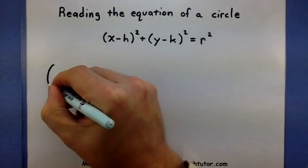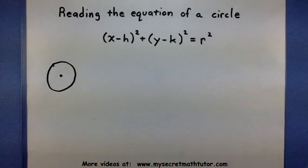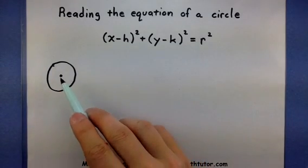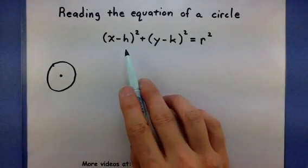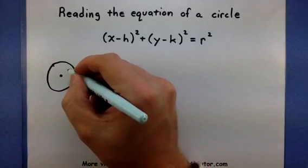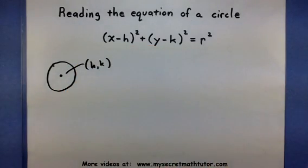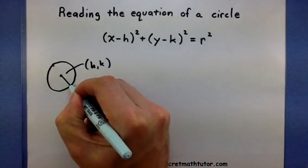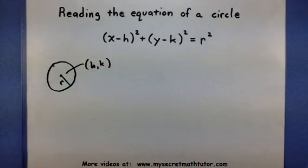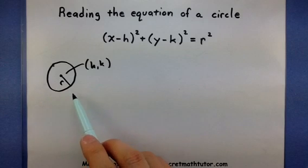When we are looking at a circle, some of the information we get from this are the location of the center point, and that comes from the two values h and k. Also, from this r on the end, we get the radius of the circle, and the radius is the distance from the center to the edge.